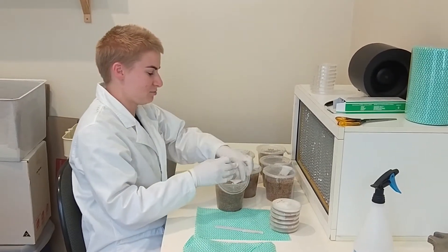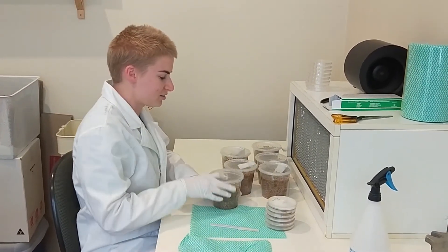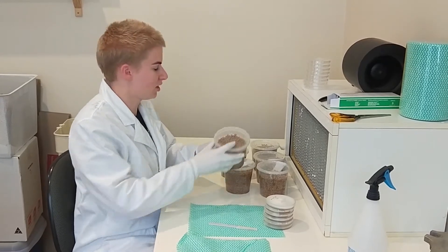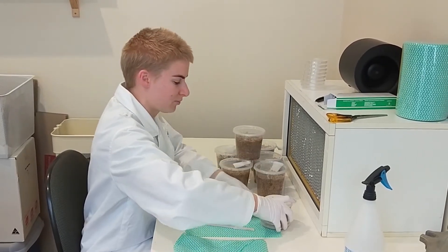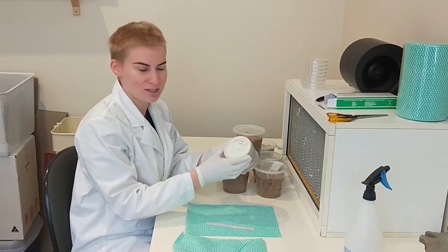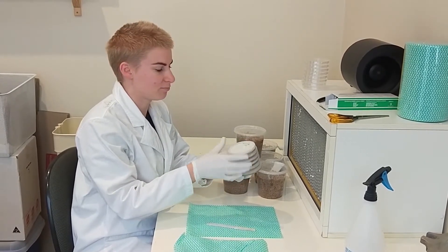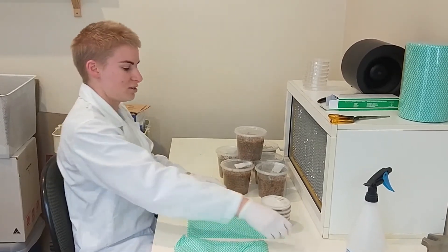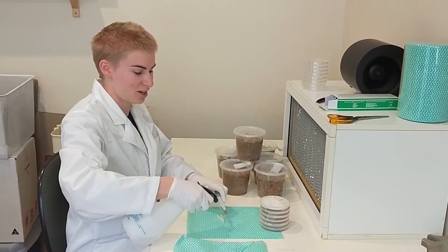We're just doing a grain transfer this morning. This is some sterilized wheat grain which we've just pulled out of the pressure cooker. We've got some petri dish cultures of Phoenix oyster, which is Pleurotus pulmonarius. It's super healthy and ready to move on to its next substrate, so we're going to help it do that today.